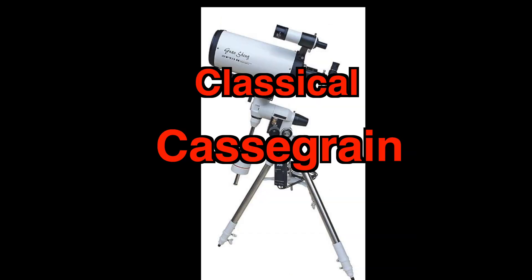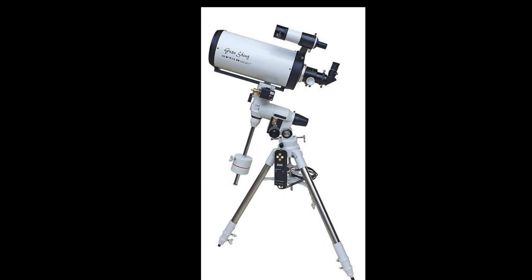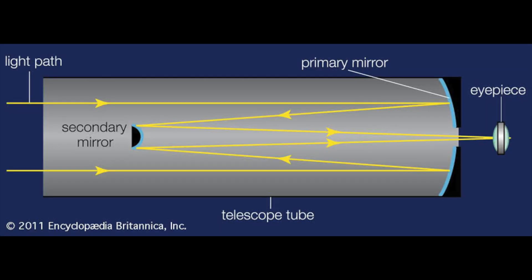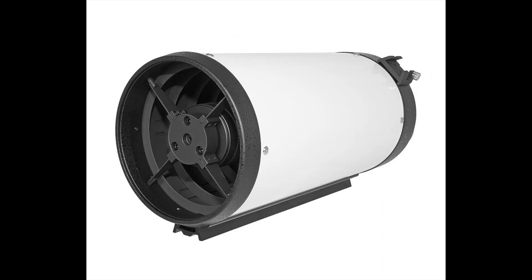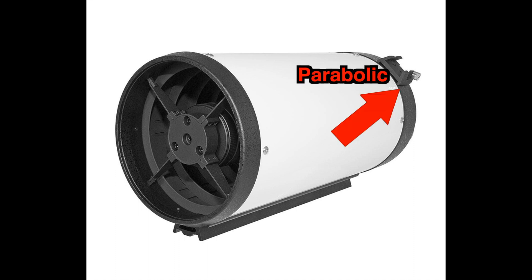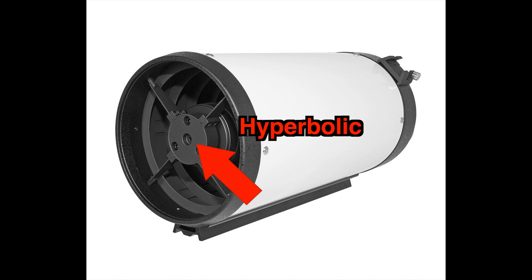The one we're going to talk about today is the classical Cassegrain telescope. Classical Cassegrain does not have a connector plate - it has two mirrors in the optical system. This is the telescope's tube that holds the whole optical system inside it.